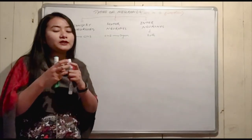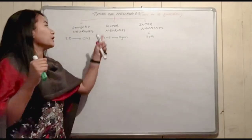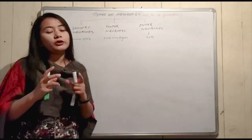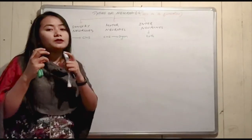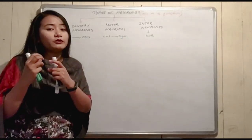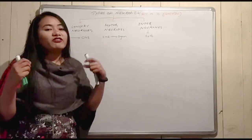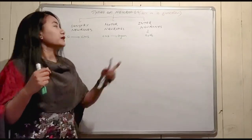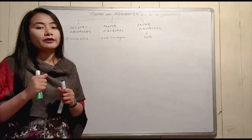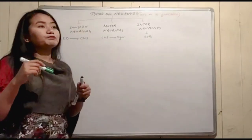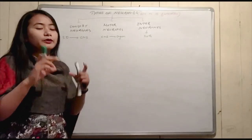The sensory neuron carries signals from the sensory receptor to the central nervous system. The motor neuron carries signals from the central nervous system to the effector organ. The inter-neuron works between them. Let's look at an example to make this clear.